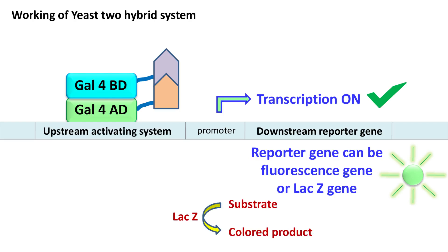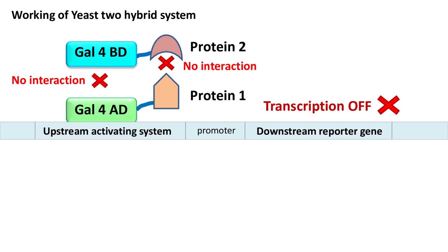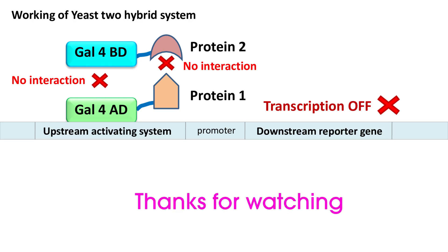If protein 1 and protein 2 fail to interact, then there is no interaction between the Gal4 AD and Gal4 BD domains. As a result, there is no transcription of the downstream gene.